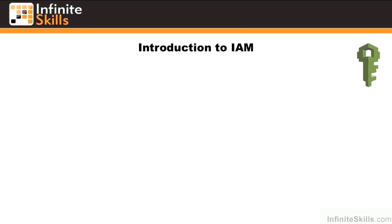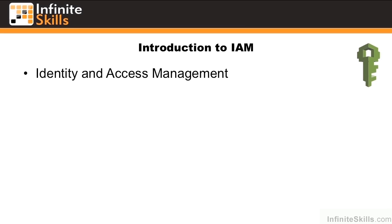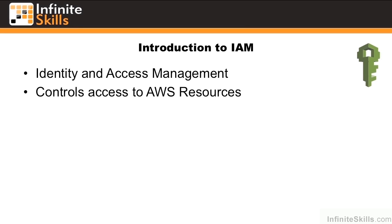In this chapter, we're going to look more closely at IAM, or Identity and Access Management. IAM is the preferred way to control access to AWS resources. With IAM, each user gets their own set of keys, and if we want to restrict access for a particular user, we can simply restrict or revoke those keys.